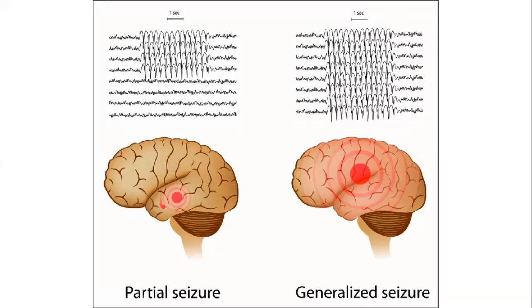Sometimes the seizure origin is partial — at one area of the brain only. Other times it is generalized, starting from one area and quickly spreading to other parts of the brain. This excitation involves neurotransmitters. Students are asked to predict which neurotransmitter is going high and which is going low — specifically whether it involves excitatory or inhibitory neurotransmitters.